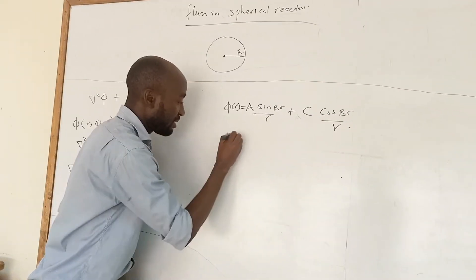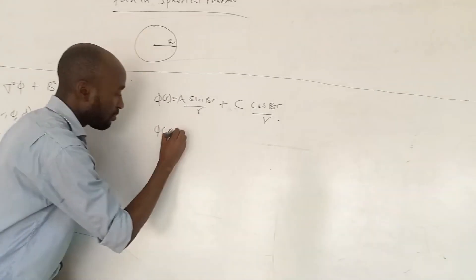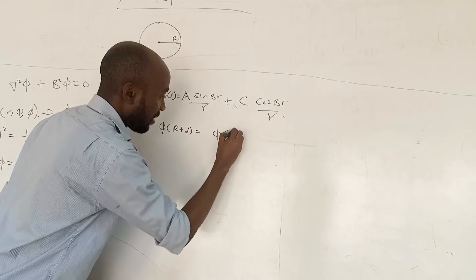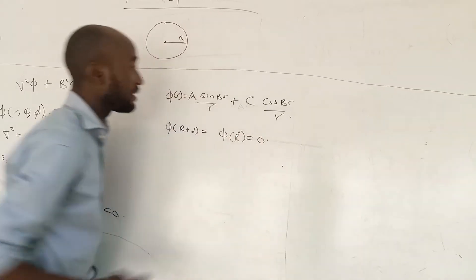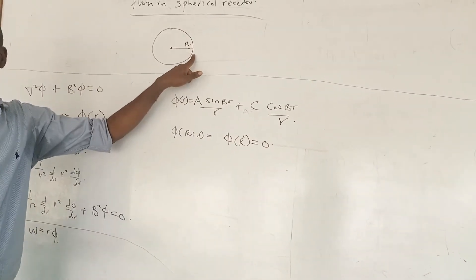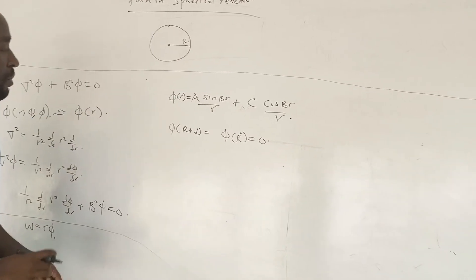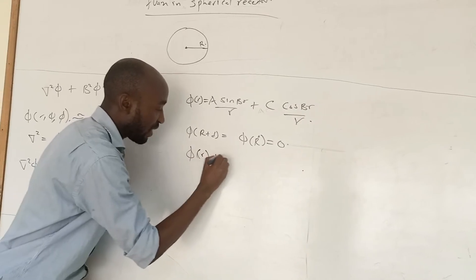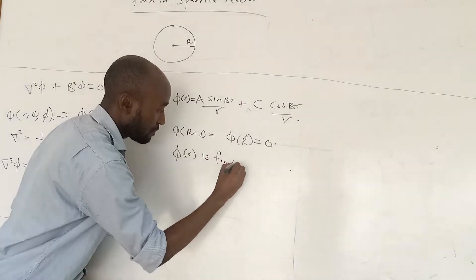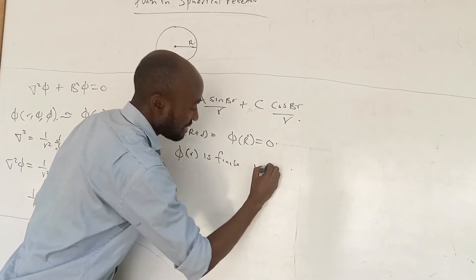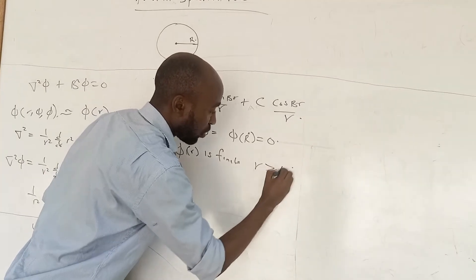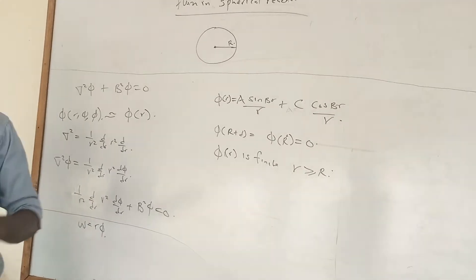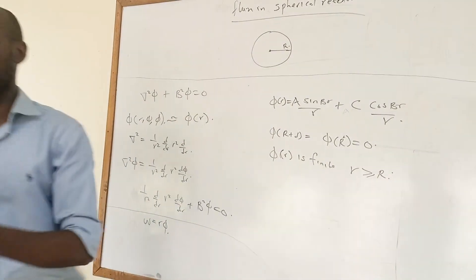That is at phi equal to R plus d, phi is equal to zero. That is at the extrapolated distance it was equal to zero. But phi is finite when r is greater than or equal to zero.